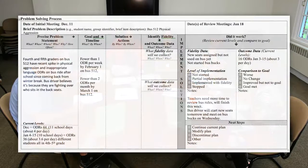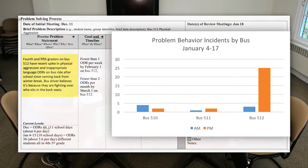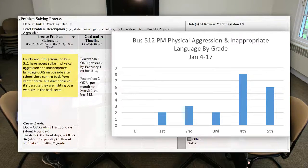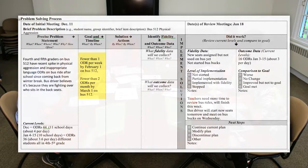I can go ahead and review our problem and goals from last time. If you guys look at the meeting minutes, you can see where the precision problem statement was — there are fourth and fifth graders on bus 512 that have been having a recent spike in physical aggression. It's just on the bus ride after school, and it just started after winter break. The bus driver believes it's because they are fighting over who sits in the back seat. Our goal is for fewer than one ODR per week by February 1st on bus 512, and then fewer than two ODRs per month by March 1st on the same bus.